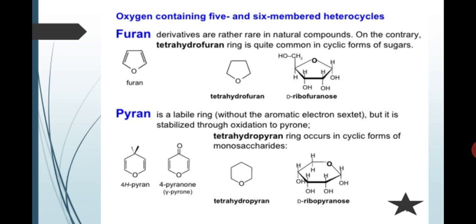And pyran is a labeling ring without the aromatic electron sextet but it is stabilized through oxygen. In pyran, tetrahydropyran ring occurs in cyclic form of monosaccharides. The example is deoxyribopyranose.